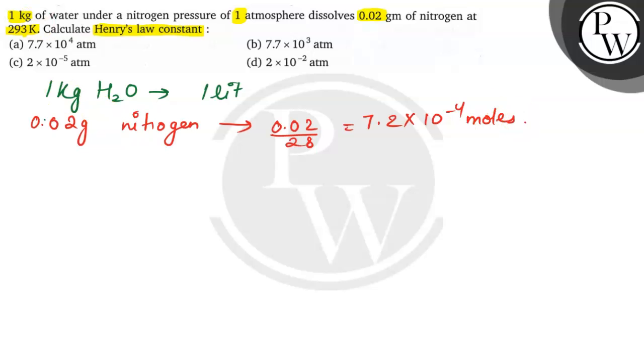So what is the solubility? Solubility is given as 7.2 × 10^-4 moles. According to Henry's law, we know that solubility is equal to KP, where P is the pressure, K is the constant, and S is the solubility.